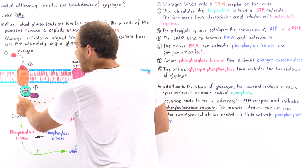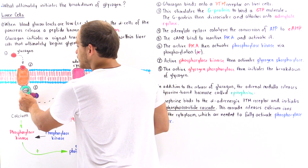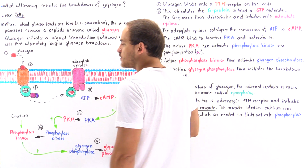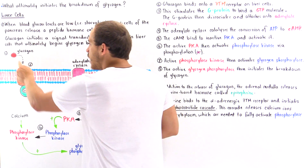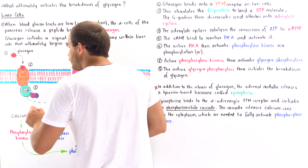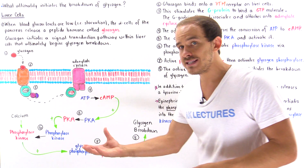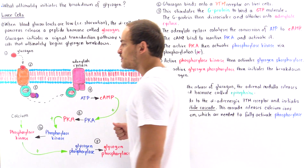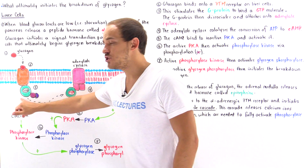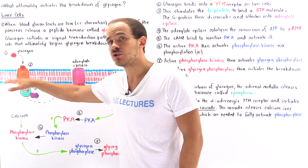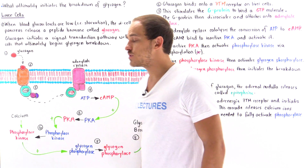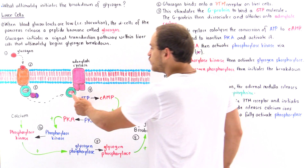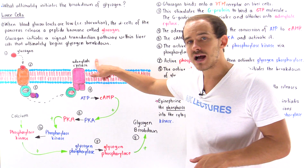On the other side of the receptor, we have a G protein that contains a GDP bound to it. When GDP is bound, the G protein is inactive. But upon the binding of glucagon, the GDP is expelled and a GTP enters this pocket. Once GTP is bound, it activates the G protein and causes it to dissociate from the glucagon receptor, whereupon it moves on to adenylate cyclase.